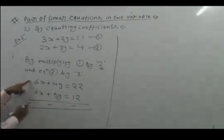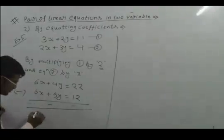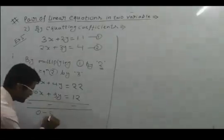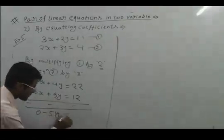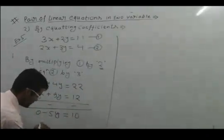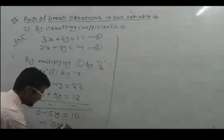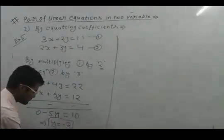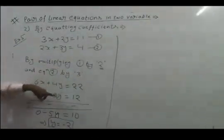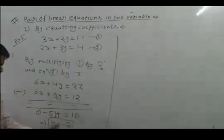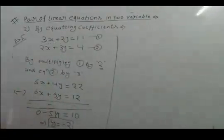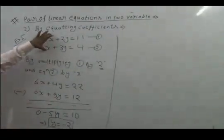Now, 6x minus 6x is 0. 4y minus 9y is minus 5y. 22 minus 12 is 10. So minus 5y equals 10, which implies y equals minus 2. So 4y minus 9y is minus 5y and the result is 10, therefore y equals minus 2.